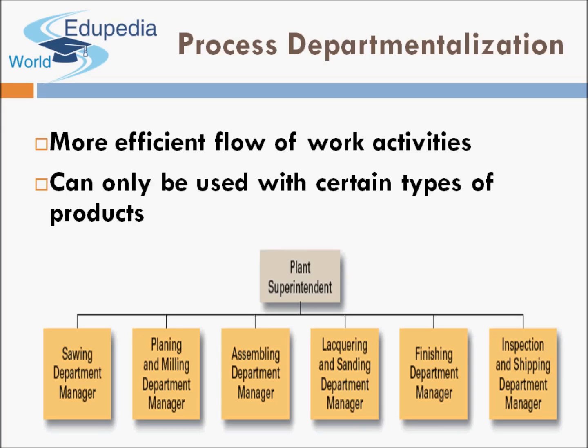Looking at a process departmentalization diagram, the departments are: Sawing Department, Planning and Milling Department, Assembling Department, Lacquering and Sanding Department, Finishing Department, and Inspection and Shipping Department. One product goes through all these multiple stages, and each stage has its own department. The key points are that it allows a more efficient flow of work activities, but can only be used with certain types of products where production involves multiple stages.